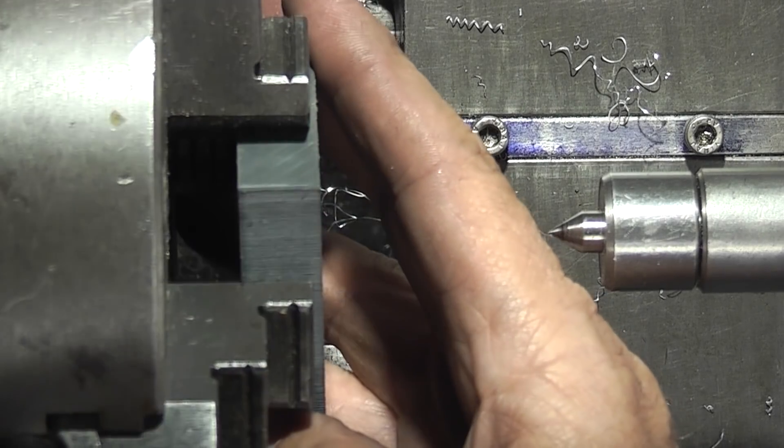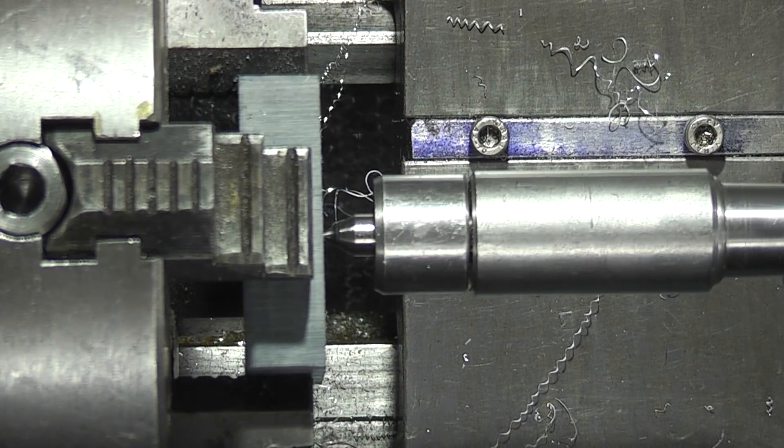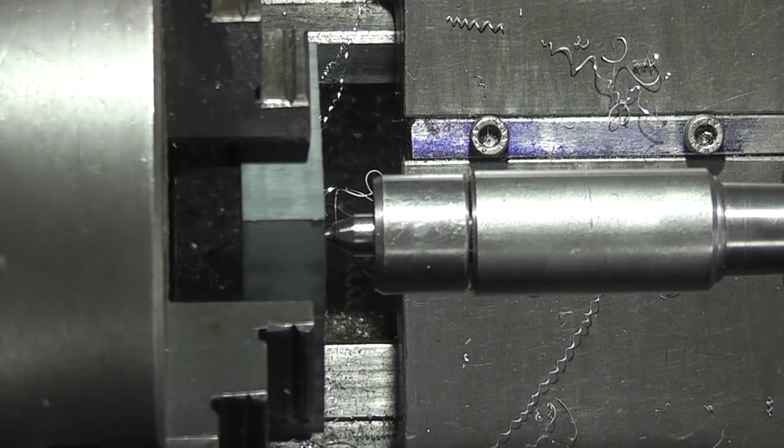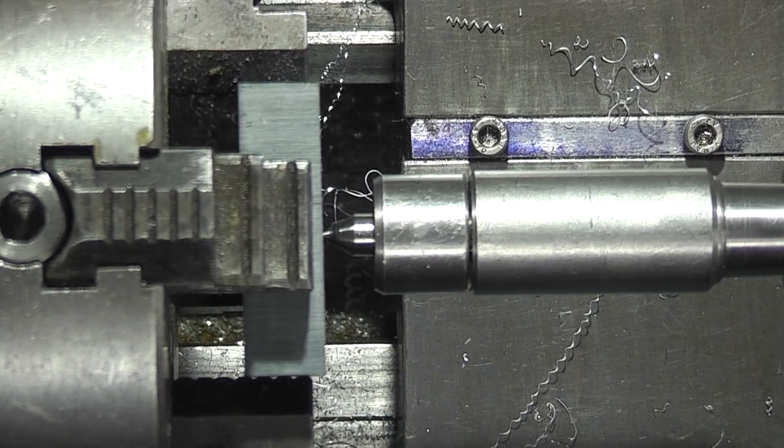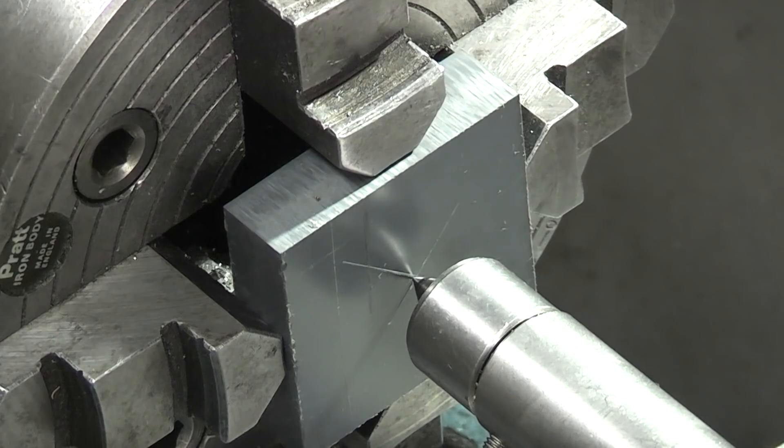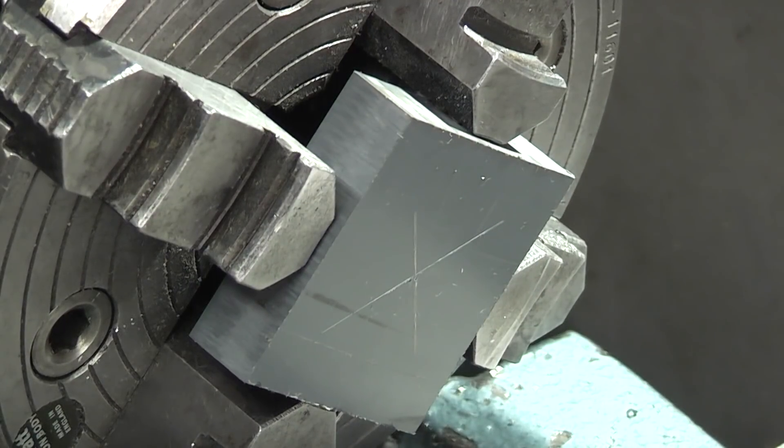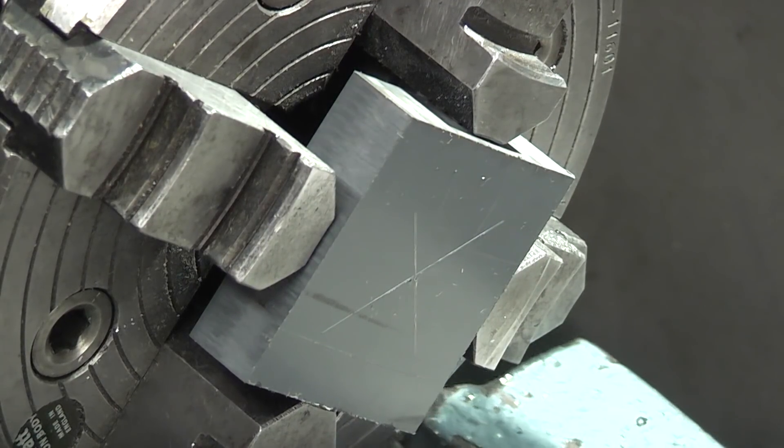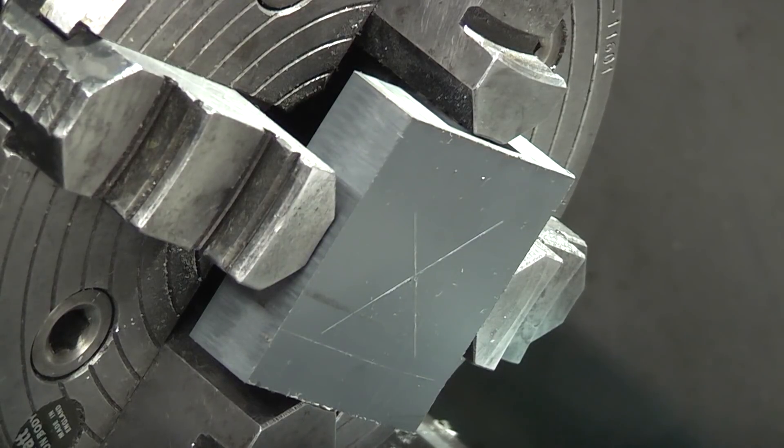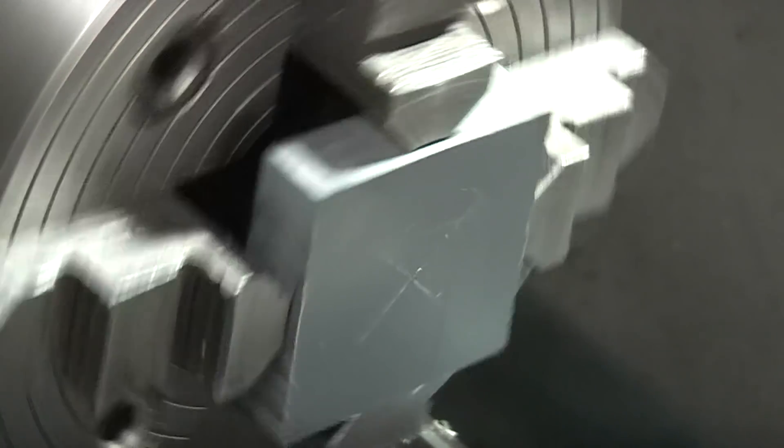I'll just adjust the plastic so it protrudes out of the chuck jaws a small amount to allow me to face the plastic off once I've bored the hole. I'll just check that all the chuck jaws are tight before I start to machine.